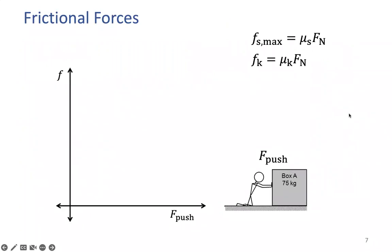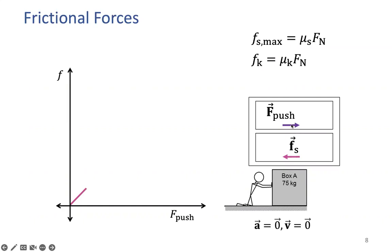Consider the example of the same box the lady was pushing. When she applies no force, the friction force is zero — no force applied, no resistance. On a graph with applied force on the x-axis and friction force on the y-axis: at zero applied force, friction is zero. If she applies 5 newtons, the object is not yet in motion — zero acceleration, zero velocity — because the static friction equals and opposes the 5 newtons. If she increases to 10 newtons, still not at the maximum static force, the box remains stationary with forces balanced.